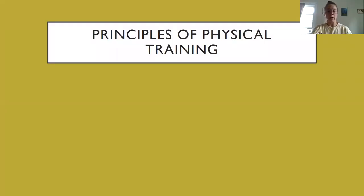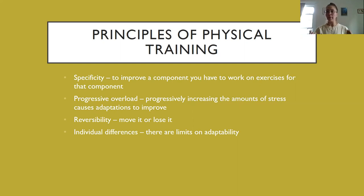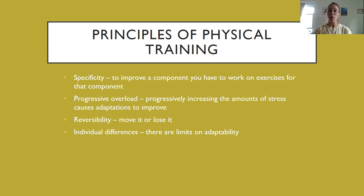There are four principles of physical training. The first is specificity: to improve a component of physical fitness, you must do exercises that target that component. For example, to improve pull-ups, you'd do bicep curls, lat pull-downs, and hang holds — exercises targeting the specific muscles involved. The second is progressive overload: progressively increasing the amount of stress causes your adaptations to improve. For example, if your goal is to run a marathon, you wouldn't jump from running three miles to 26.2 miles — you'd gradually increase duration and distance week by week.